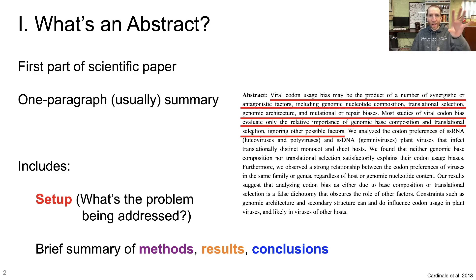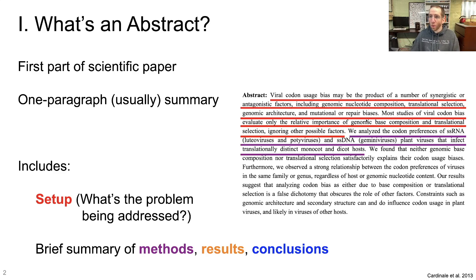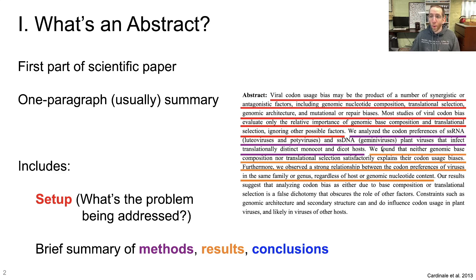So that's the setup — here are the things that could explain this thing, and most studies only consider a couple of factors and ignore the rest. What were our methods? We analyzed the codon preferences of single-stranded RNA viruses and single-stranded DNA viruses, plant viruses that infect translationally distinct monocot and dicot hosts. Very brief overview. Next, results — what did we find? We found that neither genomic base composition nor translational selection satisfactorily explain their codon usage biases. Furthermore, we observed a strong correlation between the codon preferences of viruses in the same family or genus regardless of host or genomic nucleotide content.